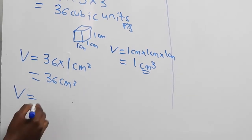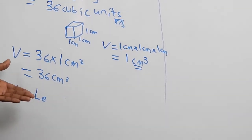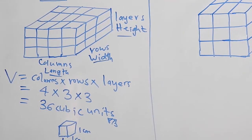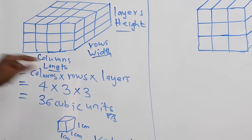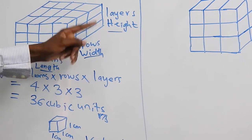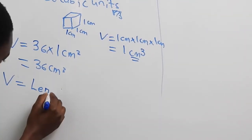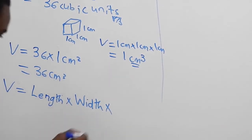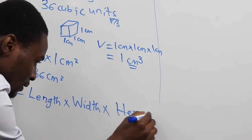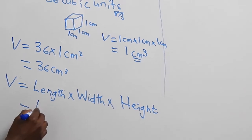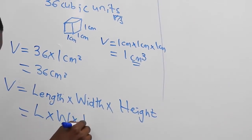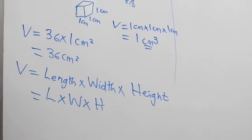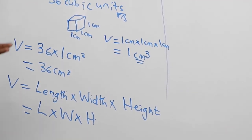So we can say that the volume of a cuboid is given by length times width times height. Since we have already seen that to find the volume we multiply the number of cubes along the columns times the rows times the layers, if we have the length, width, and height, then the volume is given by length times width times height. That is the formula for finding the volume of a cuboid.